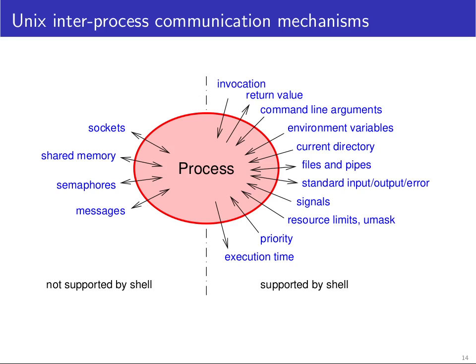To understand what a shell has to do, it's useful to get an overview of how processes can interact with each other — what inter-process communication mechanisms there are. If you look in a textbook on operating systems in the section on inter-process communication, you normally hear about things like sockets, shared memory, semaphores, and messages.